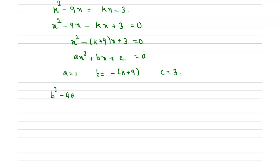Now consider the discriminant b squared minus 4ac, which is minus (k plus 9) the whole squared minus 12 greater than 0. Now expand this using the identity. So k squared plus 18k plus 81 minus 12 greater than 0. So k squared plus 18k plus 69 is greater than 0.